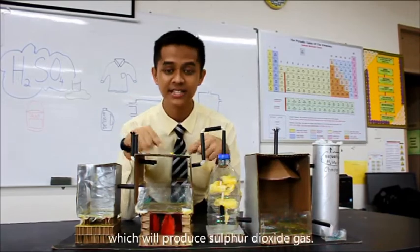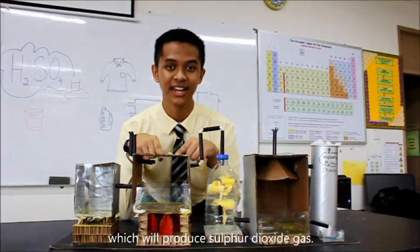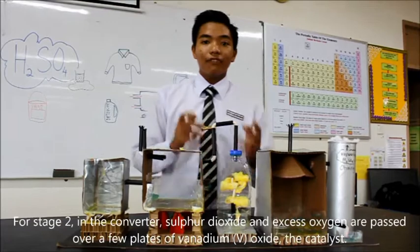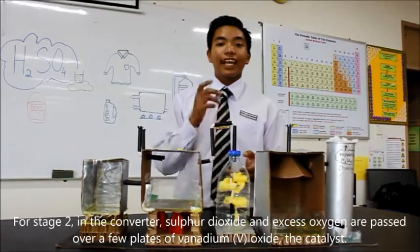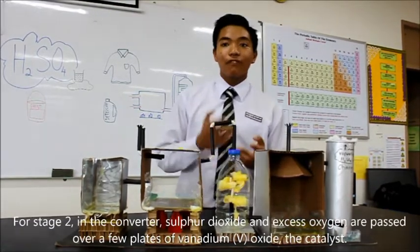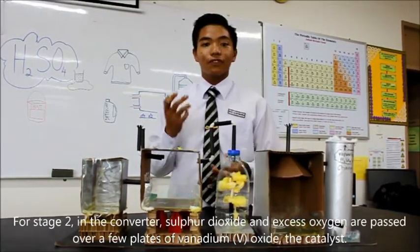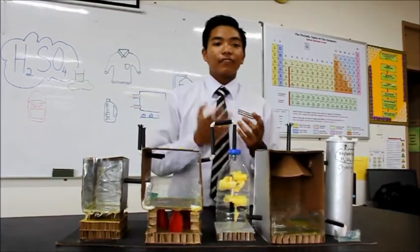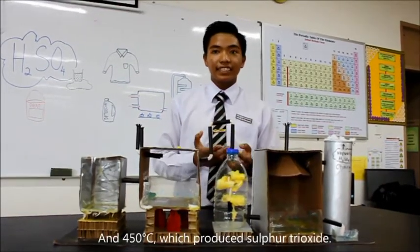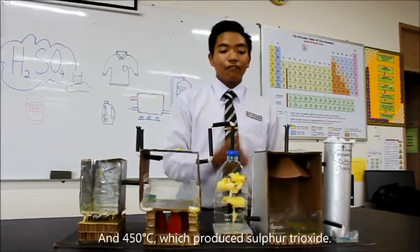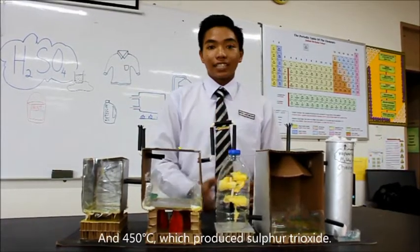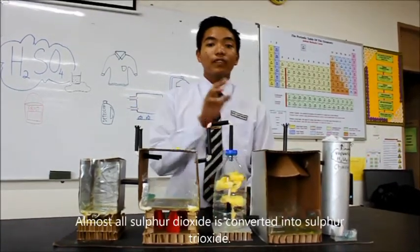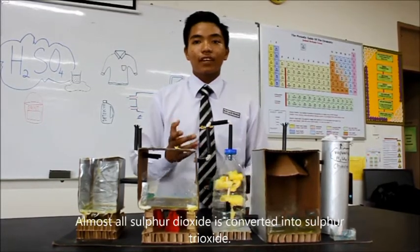Inside the furnace, the molten sulfur will be burnt with dry air, which will produce sulfur dioxide gas. For stage two, in the converter, sulfur dioxide and excess oxygen are passed over a few plates of vanadium pentoxide — V2O5 — the catalyst, at 450 degrees Celsius, which produces sulfur trioxide. Almost all sulfur dioxide is converted into sulfur trioxide.